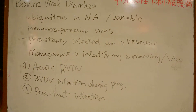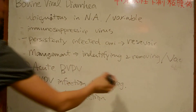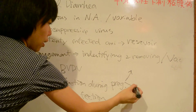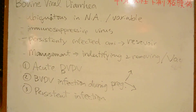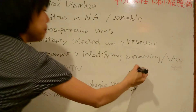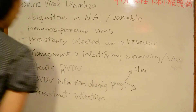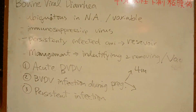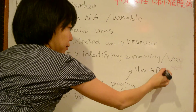Infection during pregnancy is important to remember because you see a lot of exam questions about the sequelae of this second category of BVDV. Infection during pregnancy results in abortion, mummification, and other outcomes. Importantly, infection in the first four months of fetal development can result in persistent infection.